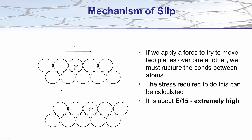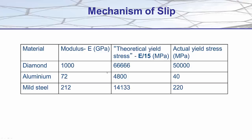We're applying a shear force across these planes, and one marked atom shows the whole plane moving over. To do this we have to break bonds between atoms and re-form new ones. The stress required to do this can be calculated, and it turns out to be roughly the Young's modulus divided by about 15 — a really high number. Looking at different materials, we can compare the modulus, the theoretical yield stress derived from this bond-breaking calculation, and the actual yield stress.